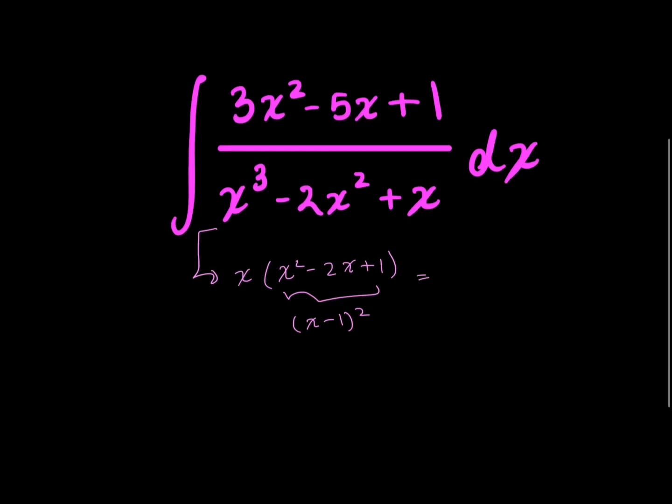So now, rewriting my integral, this is all equal to 3x squared minus 5x plus 1. And now my factored denominator is x times x minus 1 squared dx. Now let's start decomposing.